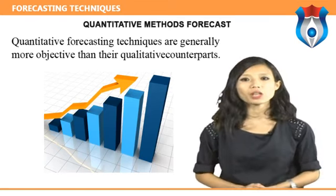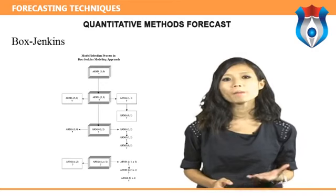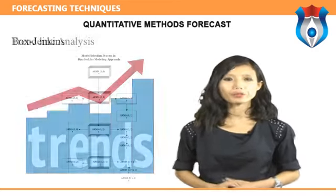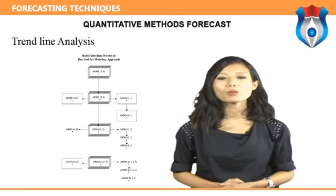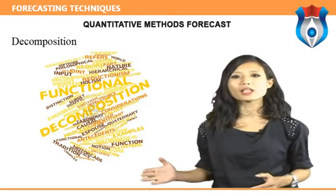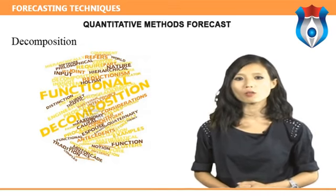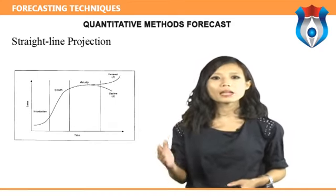Exponential smoothing makes an exponentially smoothed weighted average of past sales, trend, and seasonality to derive the forecast. Moving average takes an average of a specified number of past observations to make a forecast; as new observations become available they are used in the forecast and the oldest observations are dropped. Box-Jenkins uses the autocorrelative structure of sales data to develop autoregressive moving average forecasts from past sales and forecast errors. Trend line analysis fits a line to sales data by minimizing the squared error between the line and actual past sales values; the line is then projected into the future as a forecast. Decomposition breaks the sales data into seasonal, cyclical, trend, and noise components and projects each into the forecast. Straight-line projection is a visual extrapolation of past data projected into the future as the forecast.